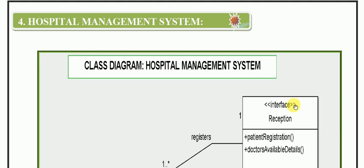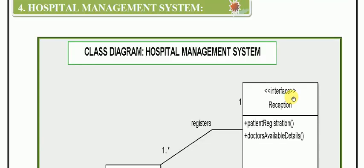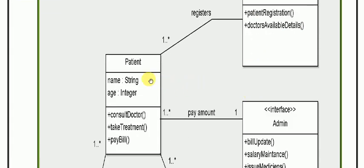Let's see how the class diagram of Hospital Management System is made. As we all know, a class diagram is a diagram in which we have classes and the relationships between the classes. We focus on which classes are in our particular system and what relationships exist between them. For the hospital management system, we have some classes.